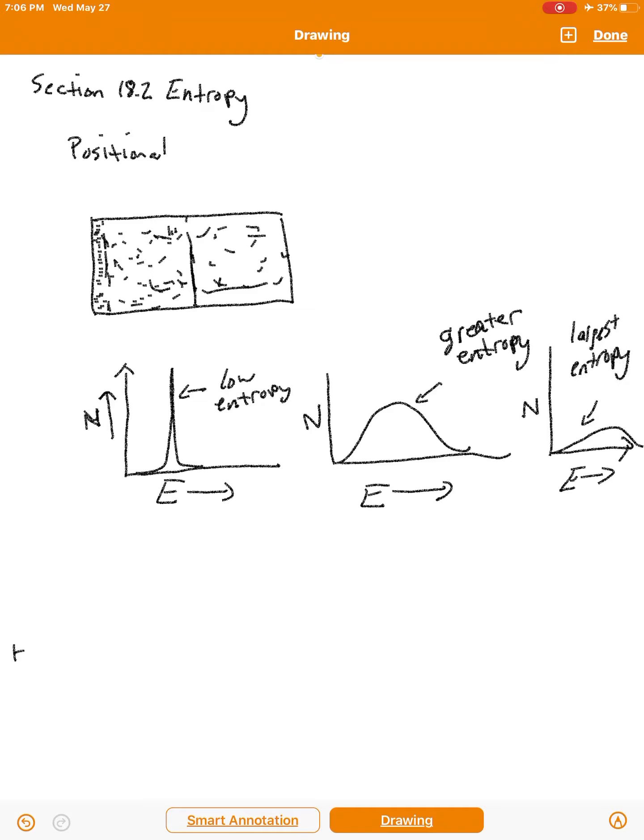So when I say positional entropy what I mean is if we allow molecules to have a wide range of possible positions and orientations that would correspond to a large entropy. If they're confined to a very small space and very little freedom to move that would correspond to a very low entropy and you can actually quantify it. Boltzmann actually quantified it with a very simple equation.